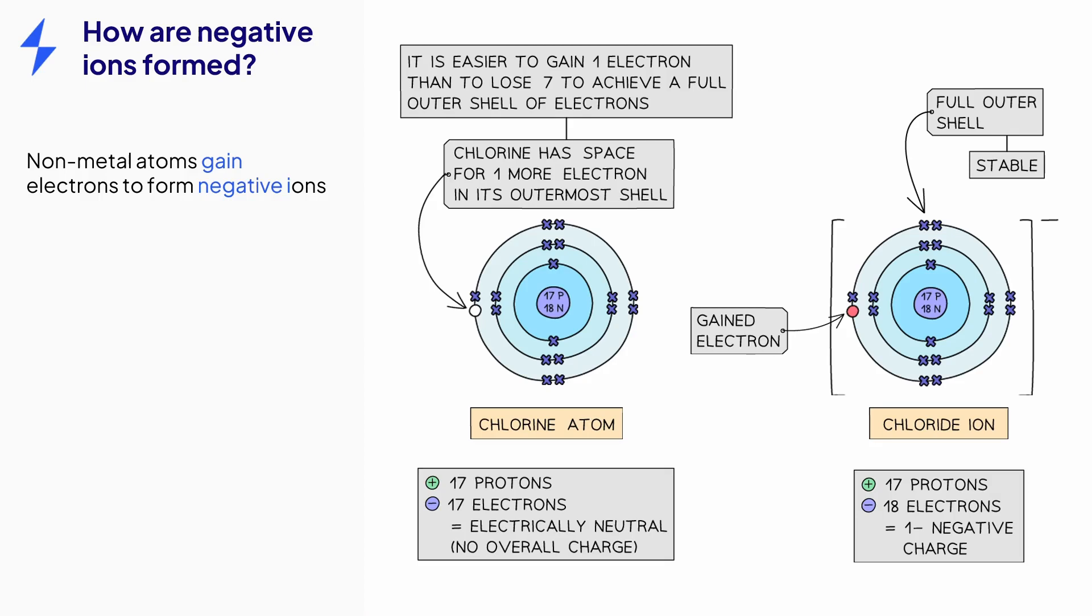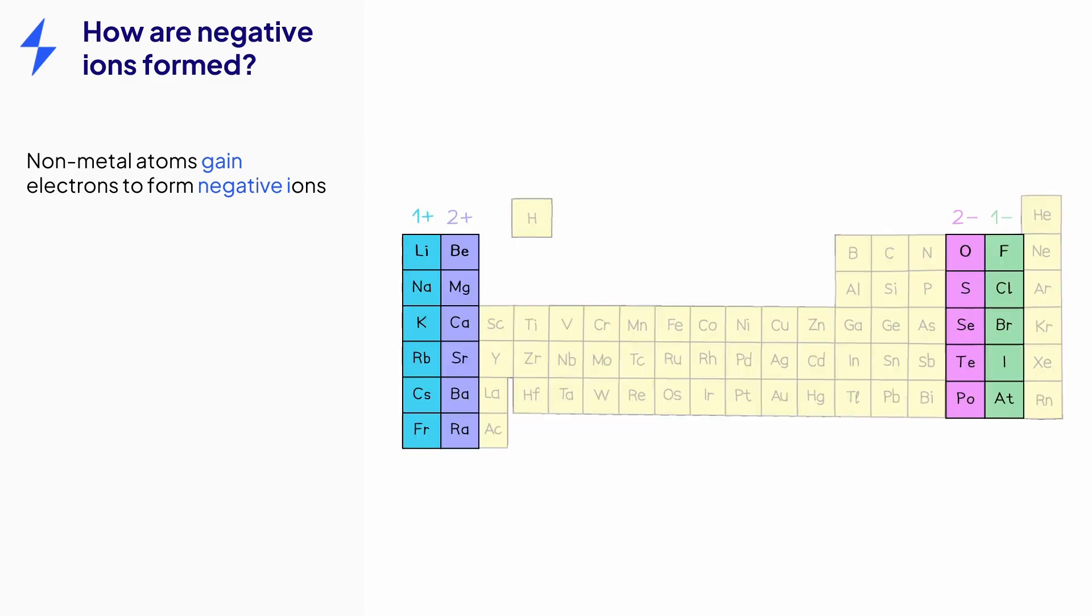Just like with positive ions, the size of the charge can be determined by the group number. Group 7 elements gain 1 electron to form ions with a 1 minus charge. Group 6 elements, such as oxygen, gain 2 electrons to form ions with a 2 minus charge, and so on. A way to remember this is that for negative ions, the group number plus the charge adds up to 8. For example, the group number of oxygen is 6, the charge on its ion is 2 minus, and 6 plus 2 is equal to 8.